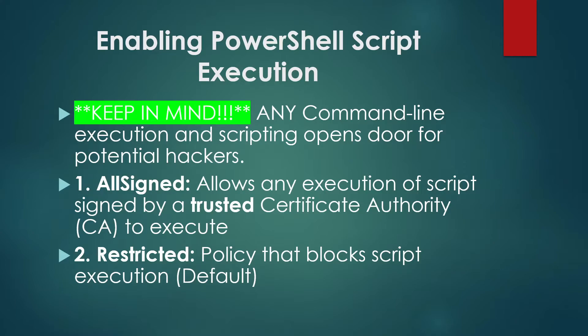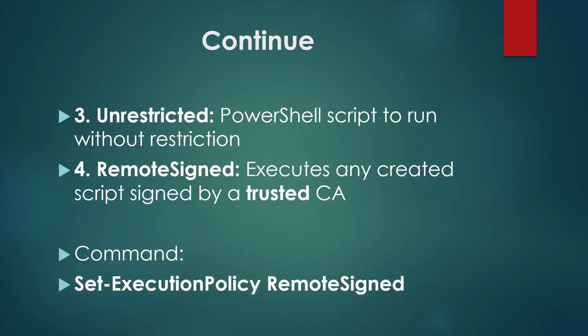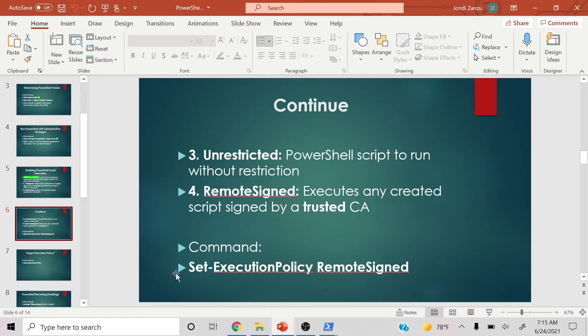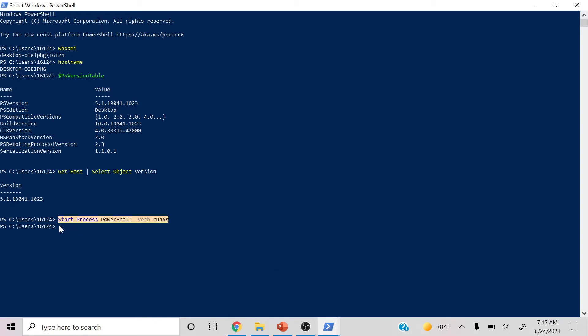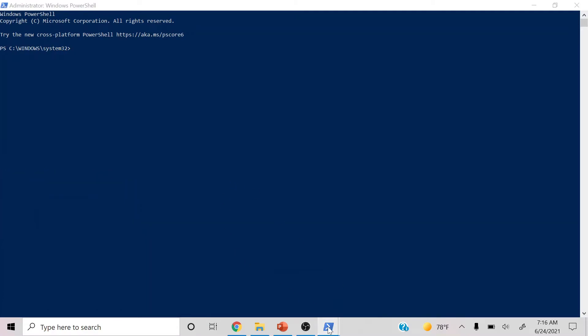Keep in mind: 'AllSigned' basically allows execution of scripts signed by a trusted Certificate Authority. 'Restricted' blocks script execution by default. 'Unrestricted' runs without restrictions. And 'RemoteSigned' executes any script signed by a trusted CA. In order to set RemoteSigned on this PC, I'll copy and paste this command.